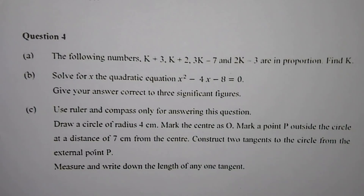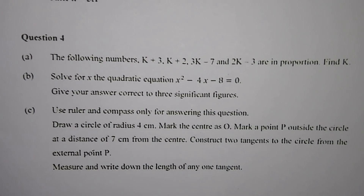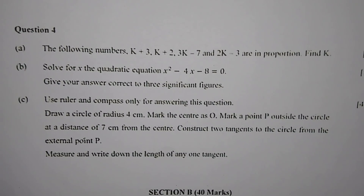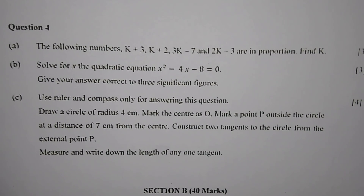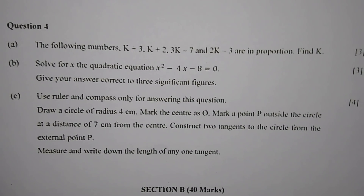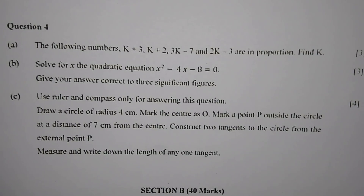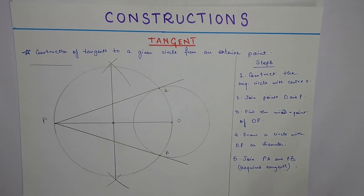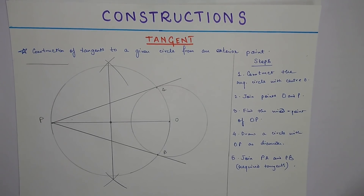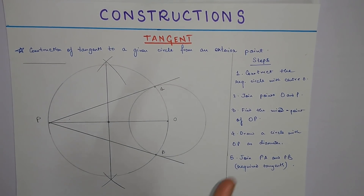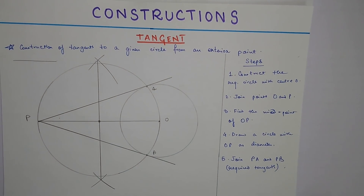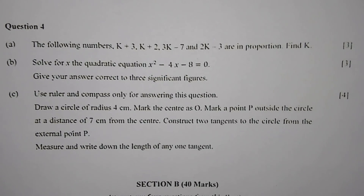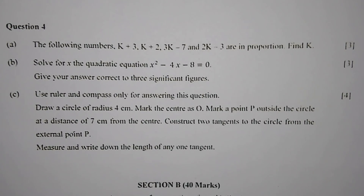Moving on to part C: using ruler and compass only, draw a circle of radius 4 cm, mark center O, mark a point P outside at 7 cm from the center, and construct two tangents from P. Since construction takes time, we refer to a similar construction from a previous video — the link is in the top right corner. With the end of Section A, we end this video. Section B will be uploaded very soon. This is Reduception signing off.